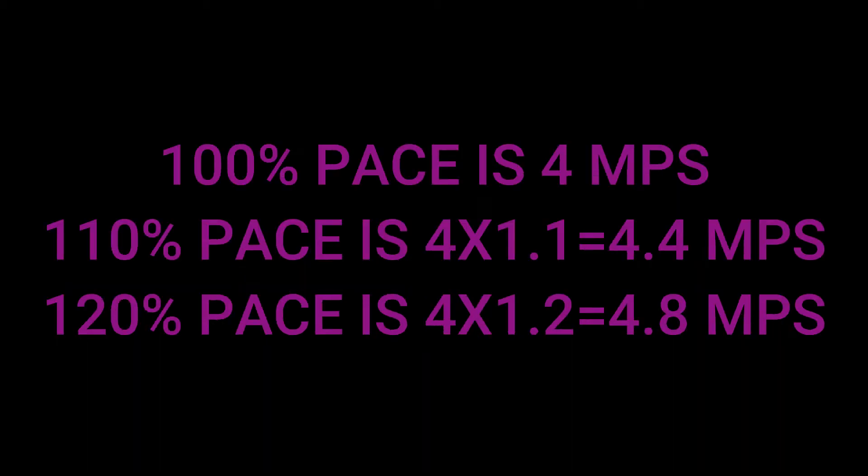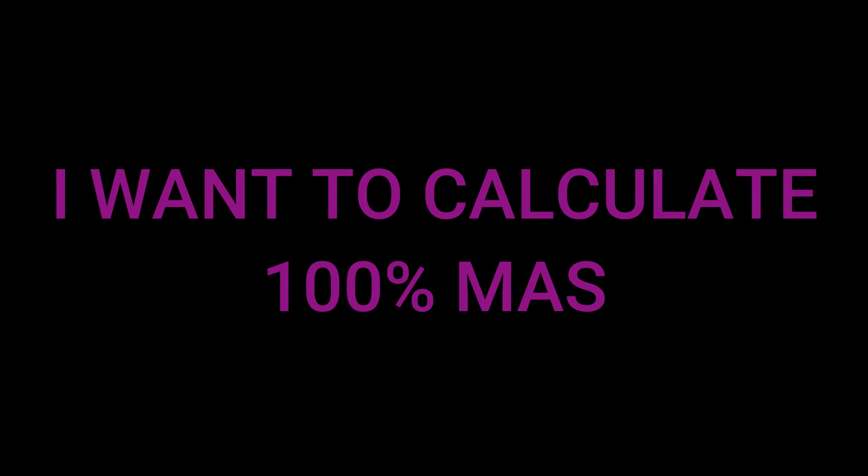100% pace is four mps. 110% pace is four times 1.1, which equals 4.4 mps. 120% pace is four times 1.2, which equals 4.8 mps. To calculate your 100% MAS shuttle distance: 4 mps times 20 seconds equals 80 meters. This is the distance you will have to run in 20 seconds.